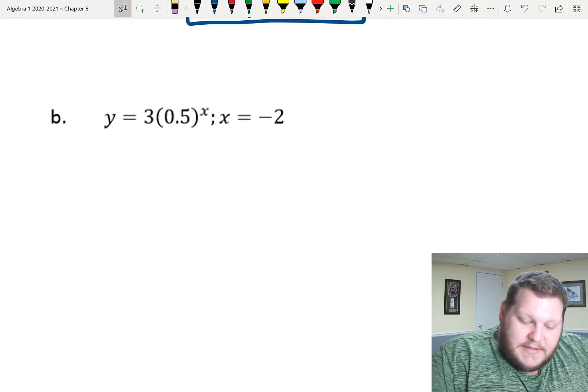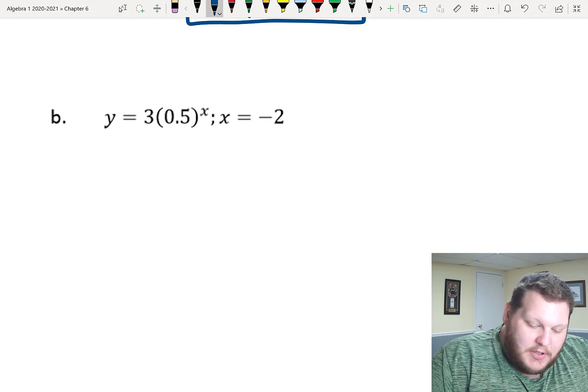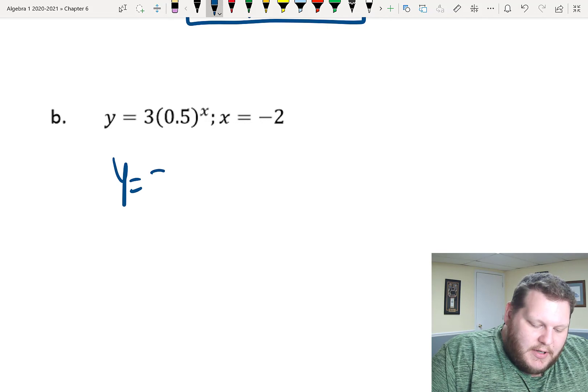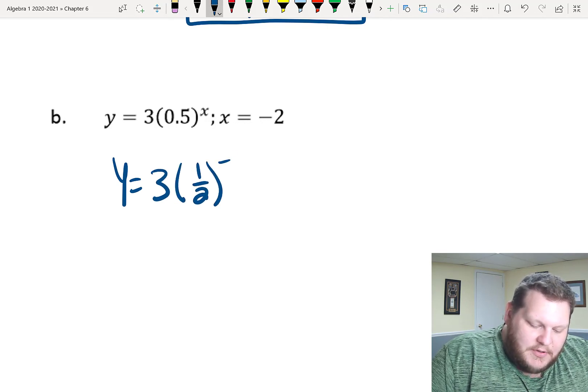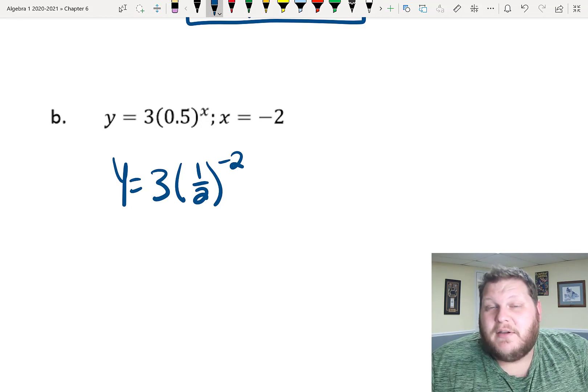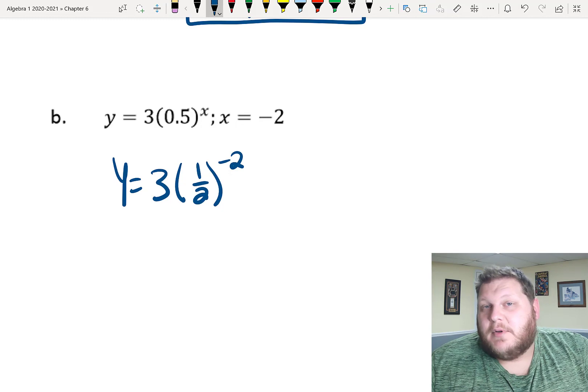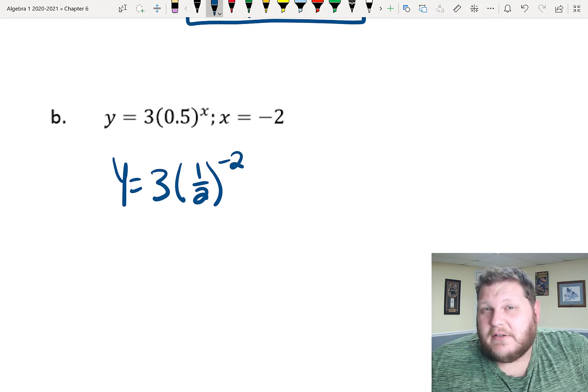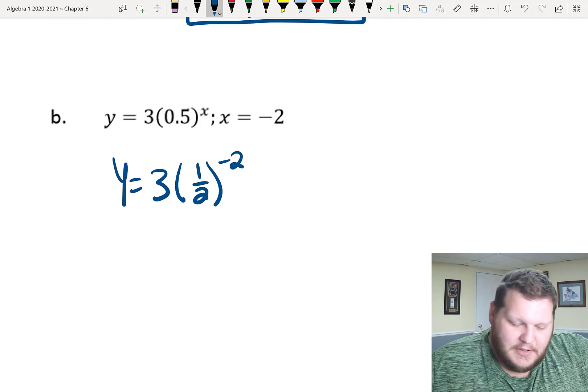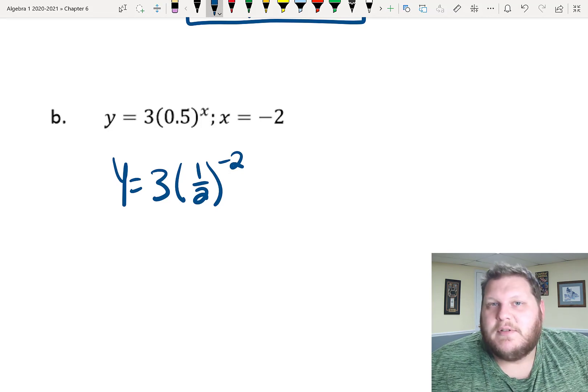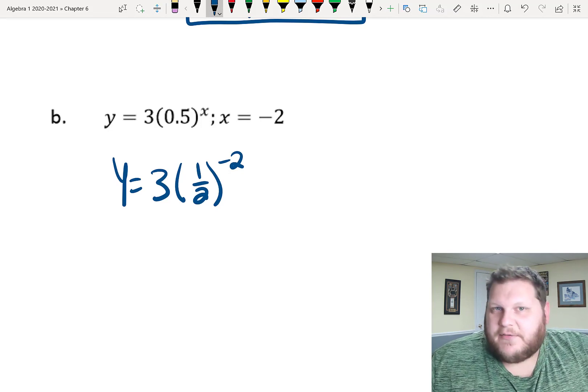For part B, same idea. I'm just plugging in negative two in for my x value. I'm going to go ahead and rewrite 0.5 as a half. I just prefer dealing with fractions instead of decimals. If you're someone who just plans on plugging this stuff right into the calculator and not using your brain, then you can just use it as 0.5. In fact, it's probably easier on the calculator to use 0.5. But, because I like using my brain, I like using my knowledge of numbers and being able to do it in my head, I'm going to put it as a fraction.